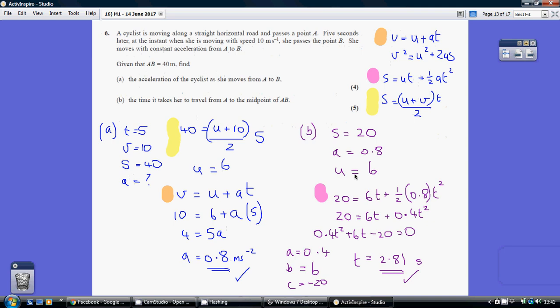So using S equals UT plus half AT squared, I end up with this simultaneous equation here, which I've just popped into my calculator to get an answer of 2.81 seconds.